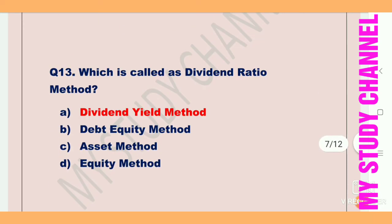Next question: which is called the dividend ratio method? The answer is option A — dividend yield method. Dividend yield method is called the dividend ratio method.